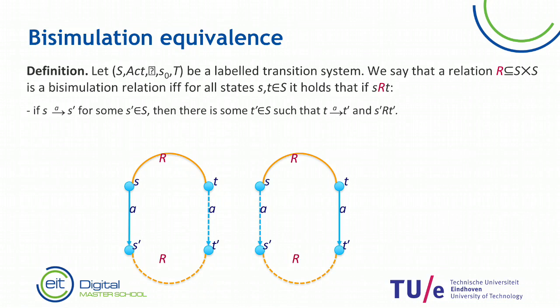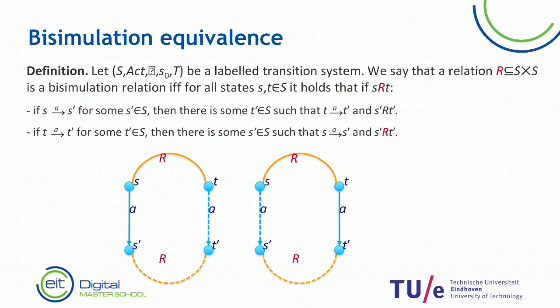In the formal definition, this looks as follows. If you can do an A step from T to T prime, then you should be able to mimic that by doing an A step from S to S prime, such that S prime and T prime are again related.